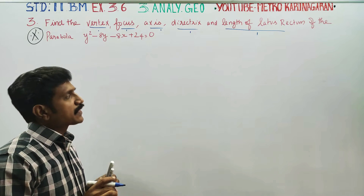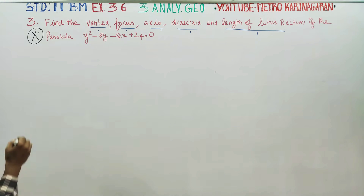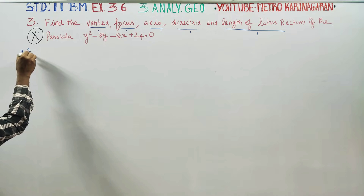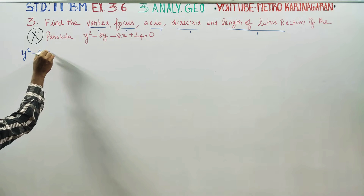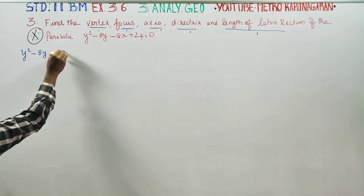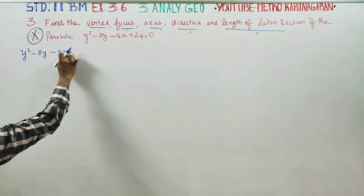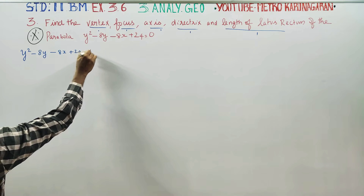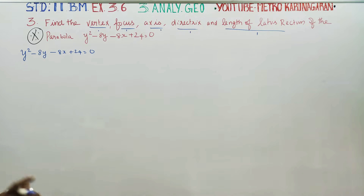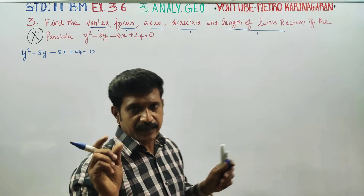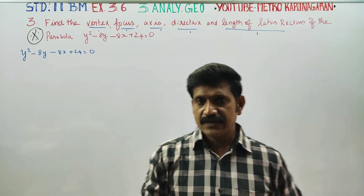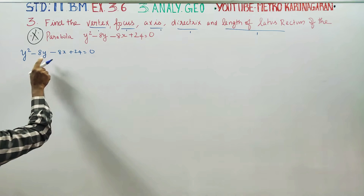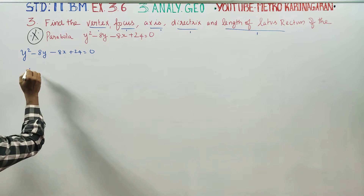How to start the sum? The first parabola equation: Y squared minus 8y minus 8x plus 24 is equal to 0. We need to complete the square. The square part is linked to the left-hand side.